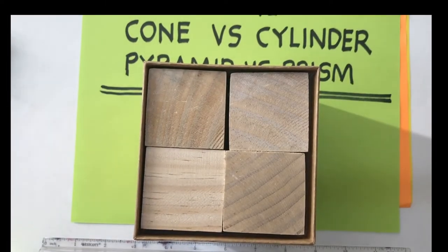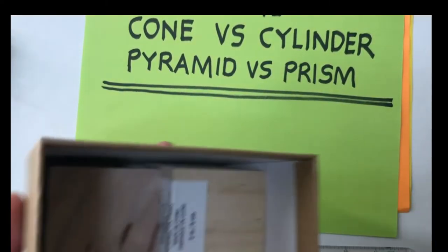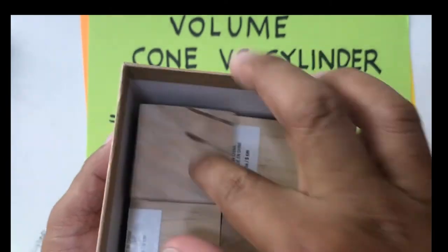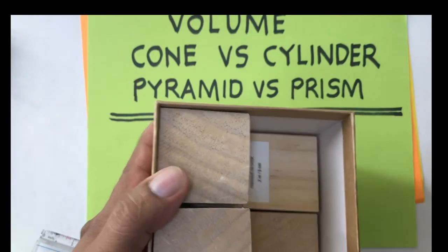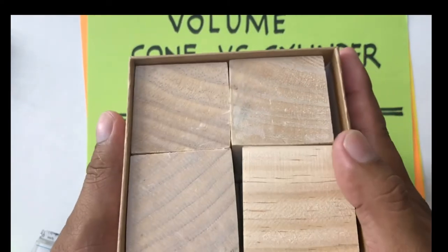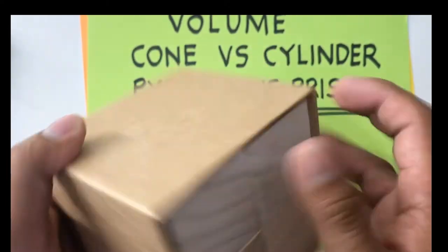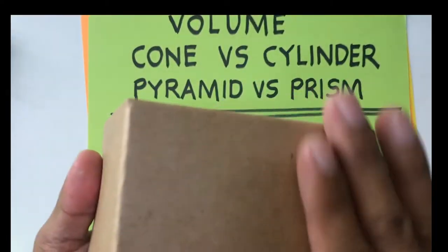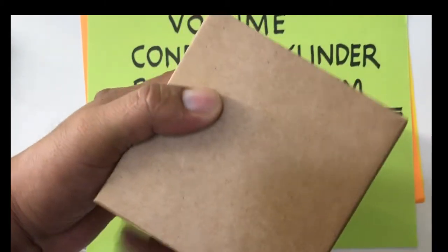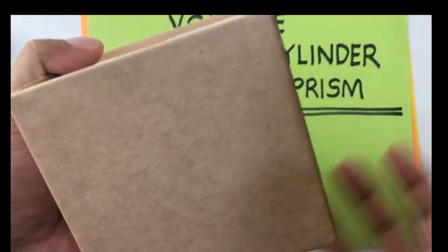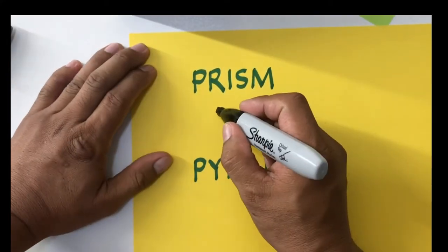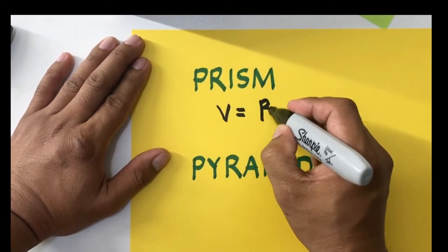Let's begin by recalling our lesson on volume. Volume is defined as the amount of space an object contains. If you have a box and you want to get the volume, you fill it with cubic units, and the number of cubic units is what we call the volume. Generally, if you have a prism where the area of the base at one end and the base on the other end are the same, and the faces are parallel, the formula for the volume is: area of the base times its height.